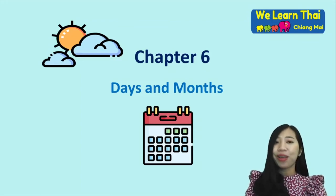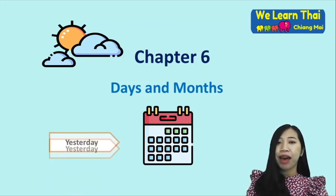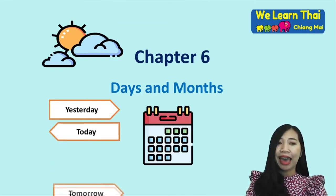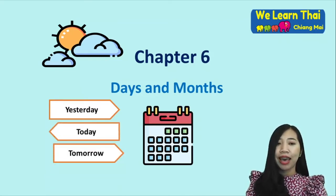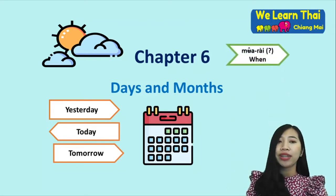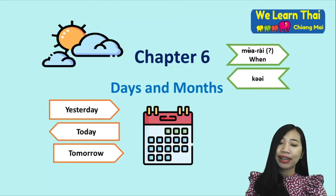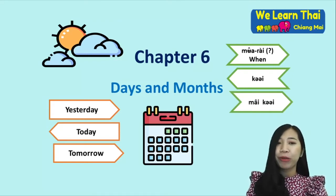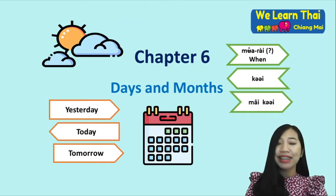For the main things of this chapter, you will learn about the words yesterday, today, and tomorrow in Thai. And also the question word mưu rai, which means 'when', and the words keoi and mai keoi, meaning having experience or not having experience. By the end of the class, you'll be able to ask people about the day and the month in Thai. I hope you enjoy this lesson.